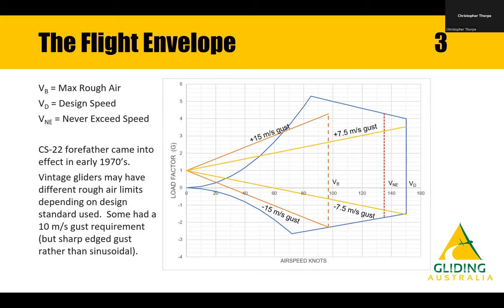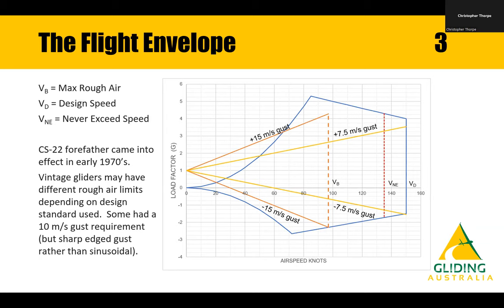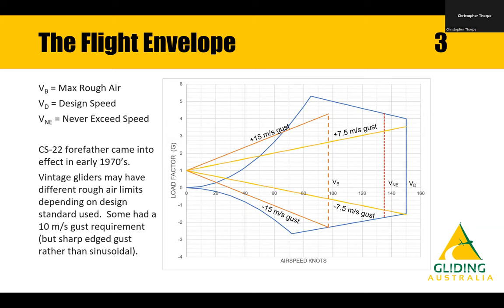CS22 also defines that you must be able to survive a plus and minus 7.5 metres per second gust all the way up to VD. People will already be doing the maths in their head — 15 metres per second is a 30-knot gust, which is well and truly into thunderstorm category territory. The aircraft designer sets the max rough air speed and then has to demonstrate the structure can withstand those gusts. There's no equation or other guidance specifying what max rough air speed must be set to.